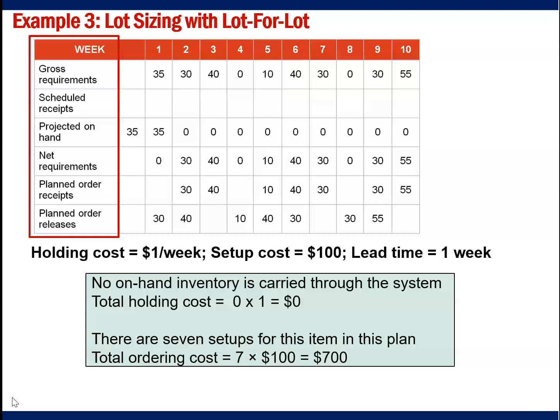Therefore, holding cost is equal to $0 multiplied by $1, which is $0. And the ordering cost is $7 multiplied by $100, which is $700.